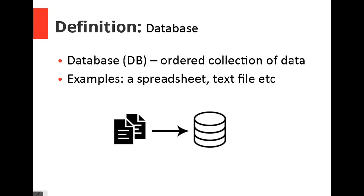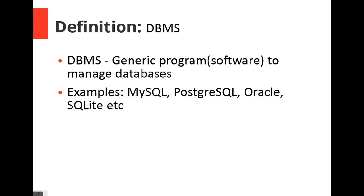An example of such an orderly collection of data could be an Excel spreadsheet, where we put data in a tabular format such that we can be able to access this data. Other forms of data storage could be a text file or many more.